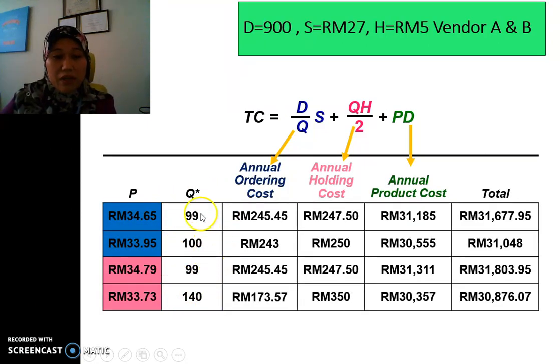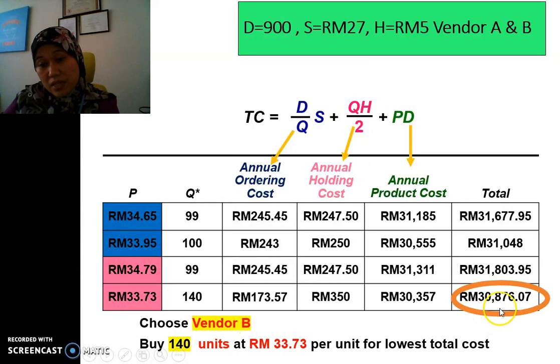All the Q that we have decided before in which some of the Q we need to be adjusted. So we have the Q, we have the price, and then we need to calculate the ordering cost, the holding cost, the annual production cost, and we have the total for the three price here. So now we need to decide which one is the lowest. So we found that this one is the lowest one. And the best answer for this lowest total cost is vendor B. So we need to answer the question, which vendor do you choose? So we choose B. We buy at 140 units at RM33.73 for the lowest total cost. We have answered for the part A.